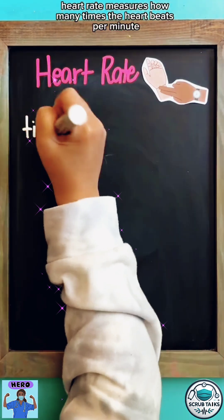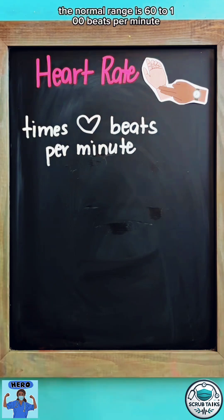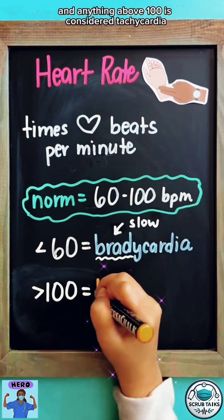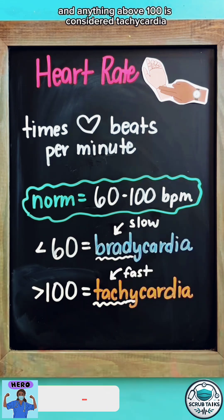Heart rate measures how many times the heart beats per minute. The normal range is 60 to 100 beats per minute. Anything below 60 is considered bradycardia and anything above 100 is considered tachycardia.